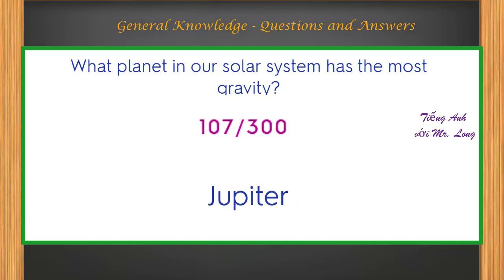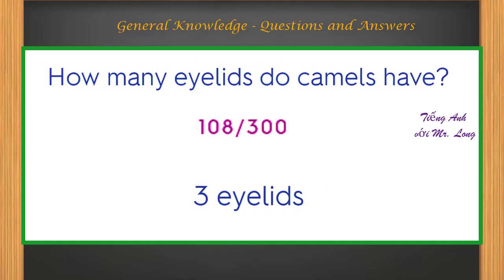What planet in our solar system has the most gravity? Jupiter. How many eyelids do camels have? Three eyelids.